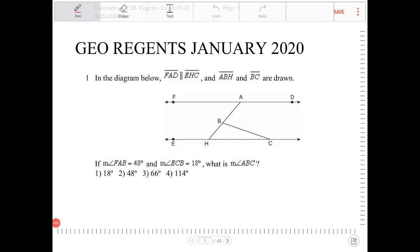Okay, in the diagram below, FAD is parallel to EHC and ABH and BC are drawn. If angle FAB is equal to 48 degrees and angle ECB is equal to 18 degrees, what is angle ABC?